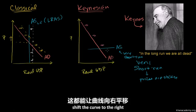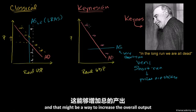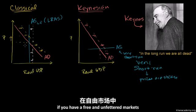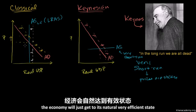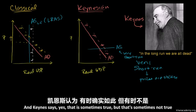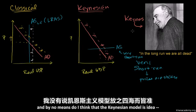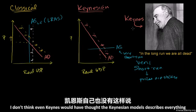Shifting the aggregate demand curve to the right might be a way to increase overall output. And Keynes' real realization was that the classical economist would tell you: if you have a free and unfettered market, the economy will just get to its natural, very efficient state. Keynes says, yes, that is sometimes true — but sometimes not. By no means do I think the Keynesian model is ideal, and I don't think even Keynes would have thought it describes everything. It depends on the circumstance.